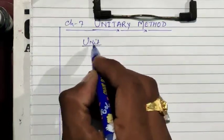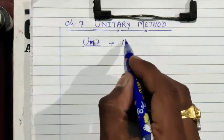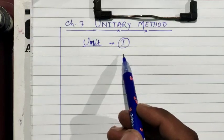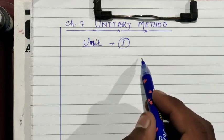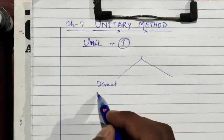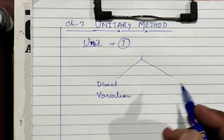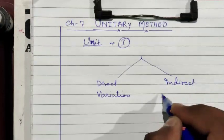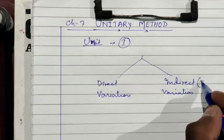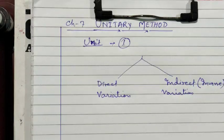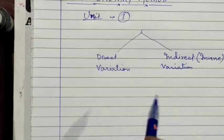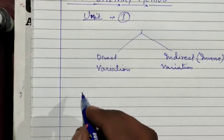First we will learn about what a unit is. Unit means one — the meaning of unit is one. In the unitary method, we are going to solve two types of problems: the first one is based on direct variation, and the second one is based on indirect variation, also known as inverse variation.